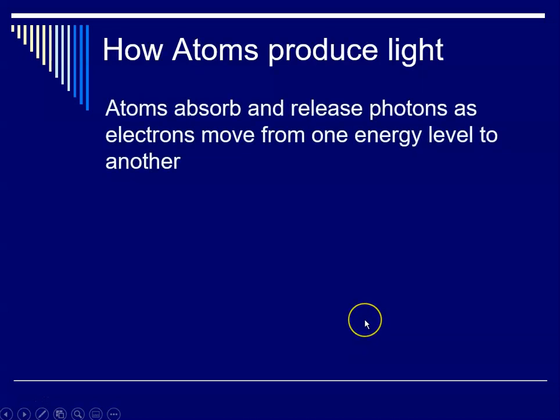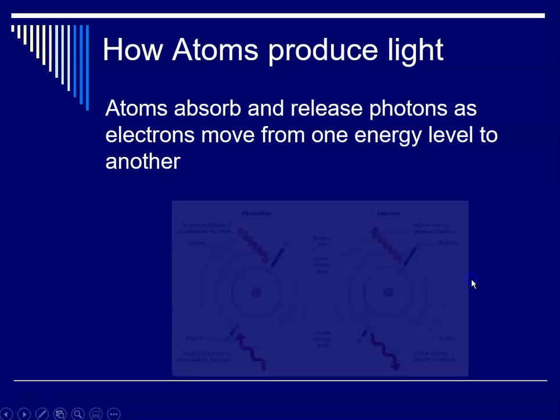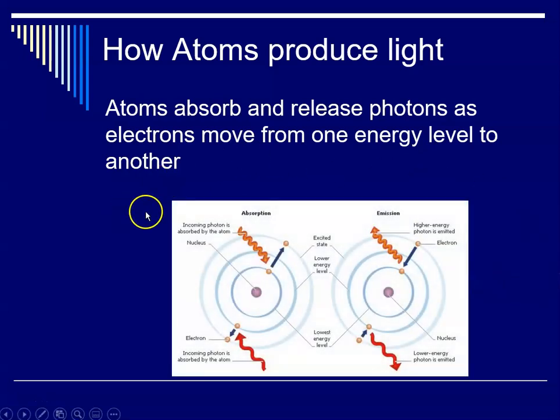So atoms are absorbing and releasing photons as electrons are moving from one energy level to another. That's how atoms produce light. So you can think of it as, if these are two atoms, you can think of incoming light as energy, and that causes the electron to jump up. And in this case, it's jumping to energy levels, and here, in this electron down here, it's jumping just to one.